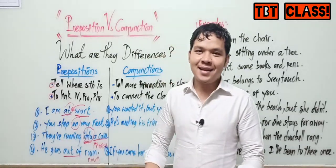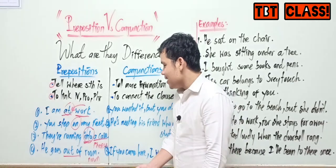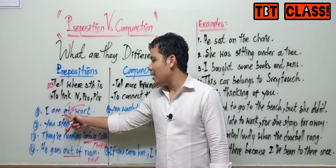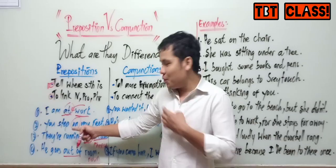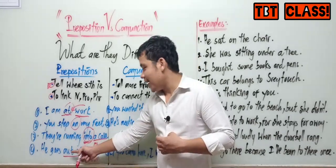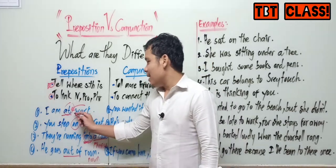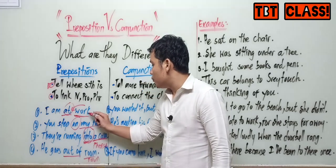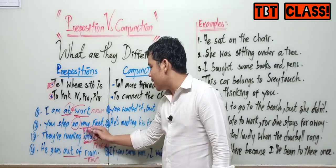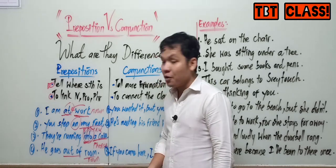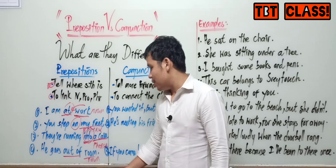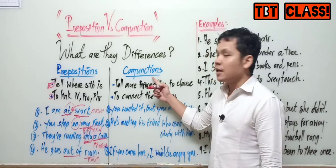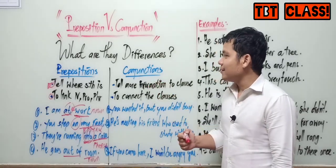So as you can see, preposition tells us where something is — where am I, what do you step on, where are they running into, where does he go. All of these words are prepositions, and after each preposition you see a noun, noun phrase — like "work" (noun), "my feet" (noun phrase), "a cave" (noun phrase), "room" (noun). Now let's move to the next one: conjunctions.